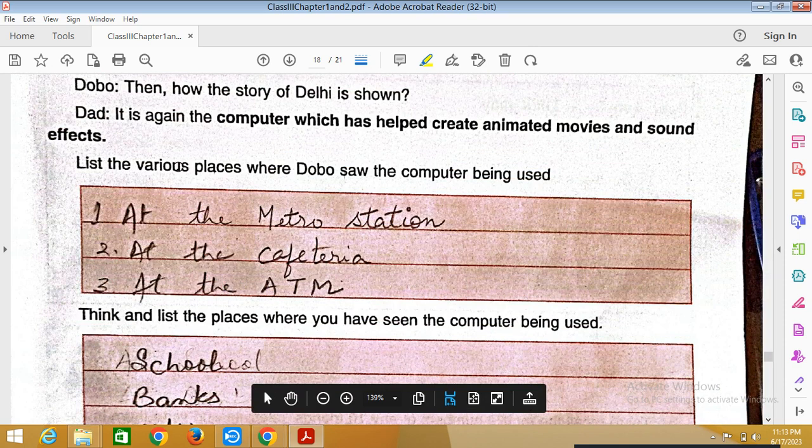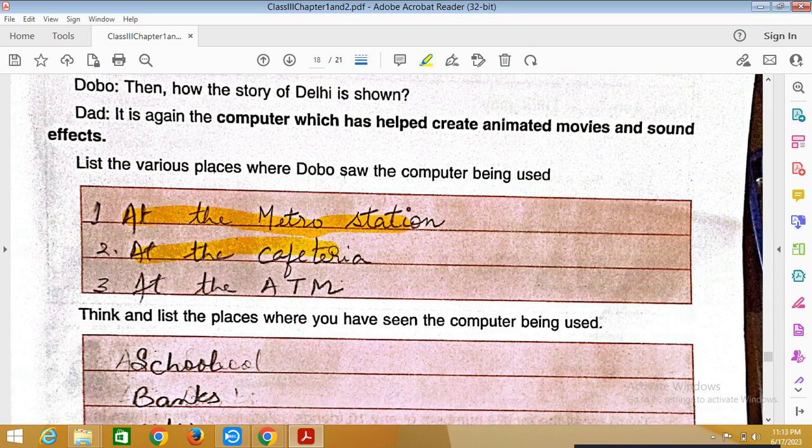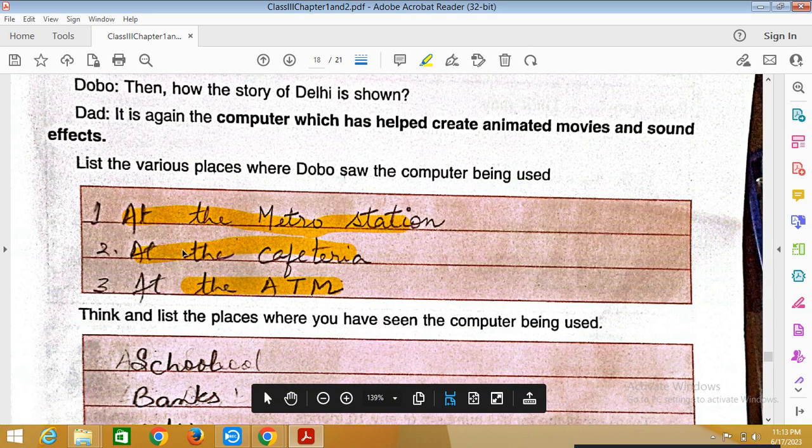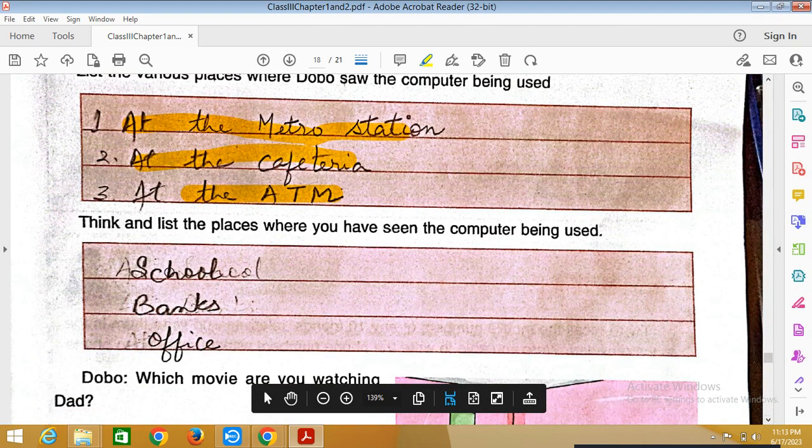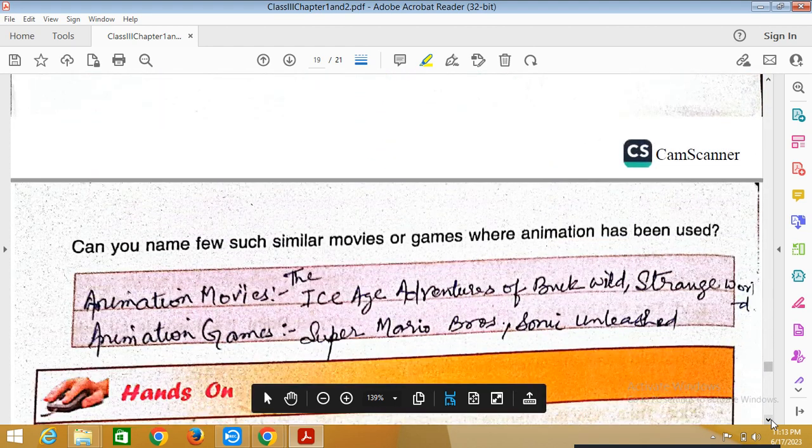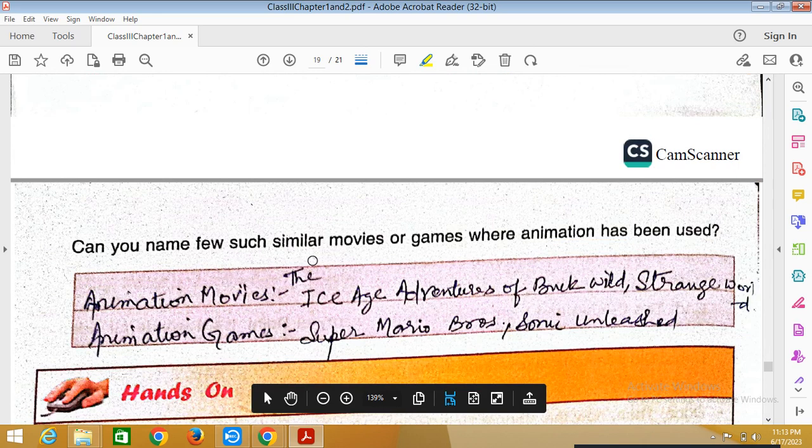Next: List the various places where Dobo saw the computer being used, what use they make of it: at the metro station, at the cafeteria, at the ATM. Think and list the places where you have seen the computer being used: schools, banks, offices, hospitals.